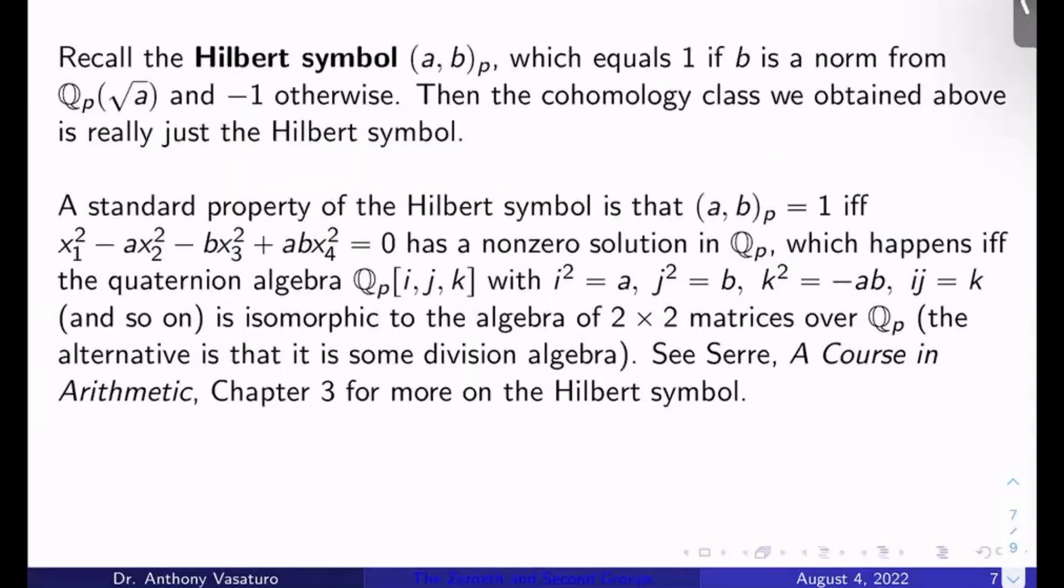A standard property of the Hilbert symbol is that (a,b)_p = 1 if and only if x₁² - ax₂² - bx₃² + abx₄² = 0 has a non-zero solution in Q_p. So it's a very strong and powerful tool in the study of quadratic forms. This happens if and only if the quaternion algebra Q_p⟨i,j,k⟩ with i² = a, j² = b, k² = -ab, and ij = k, jk = i, and so on, all the rotating conditions on i,j,k, is isomorphic to the algebra of two-by-two matrices over Q_p, M₂₂(Q_p). If you're not isomorphic to this algebra of matrices, then you're isomorphic to some division algebra.